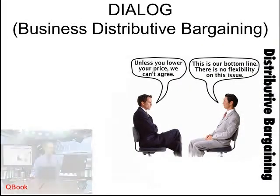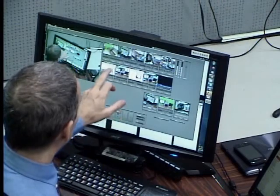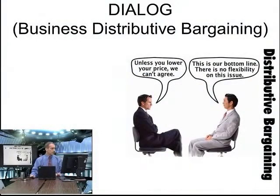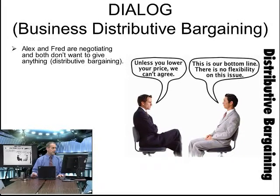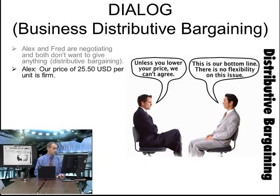Now let's jump over to a business example. We're going to look at a negotiation in a distributive situation. Last unit we were looking at planning for negotiation; now let's look at an actual negotiation. Alex and Fred are negotiating and both don't want to give anything, because if one side gives up anything, the other side gains — causing one side to lose. A very common situation: they are negotiating over price.